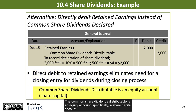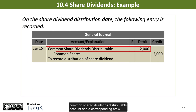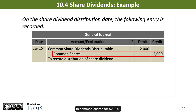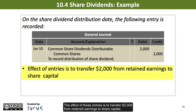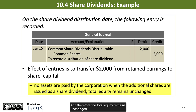The common share dividends distributable is an equity account — specifically, a share capital account. On the share dividend distribution date, the following entry is recorded with a debit to the common share dividends distributable account and a corresponding credit to common shares for $2,000. The effect of these entries is to transfer $2,000 from retained earnings to share capital. No assets are paid by the corporation when the additional shares are issued as a share dividend, and therefore total equity remains unchanged.